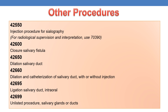Coming to other procedures: CPT 42550 deals with injection procedure for sialography. For radiological supervision and interpretation, use 70390 along with 42550. CPT 42600 deals with closure of salivary fistula. CPT 42650 deals with dilation of salivary duct. CPT 42660 deals with dilation and catheterization of salivary duct intraoral. Finally, CPT 42699 deals with unlisted procedure of salivary glands or ducts.